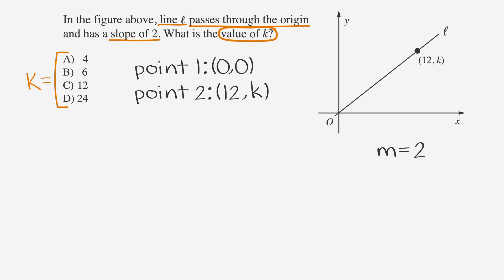We can use our slope formula to find k. m equals y2 minus y1 over x2 minus x1. Since we know our slope, we can set the fraction equal to 2. We can also plug in the values 0 and k for y1 and y2, and the values 0 and 12 for x1 and x2. That means our equation becomes k minus 0 over 12 minus 0. Since anything minus 0 is itself, our equation becomes 2 equals k over 12. We can solve for k by multiplying both sides by 12, which gives us k equals 24. Circle answer choice D because that's the right answer.